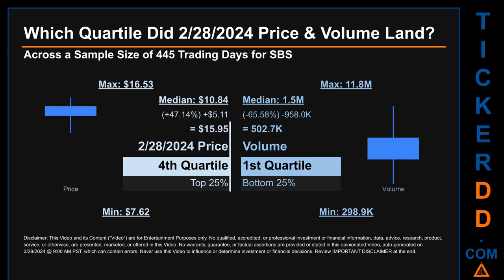Descriptively, SBS has a median price of $10.84. Therefore, February 28, 2024's price was higher than that middle marker by 47.14%. The day's volume of 502,700 was less than the median by 65.58%.